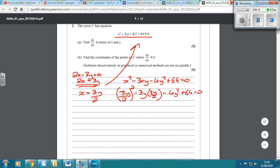So if we then expand the brackets, 3y over 2 squared is going to be 9y over 4 minus 9y over 2. So that's 9y squared minus 4y squared plus 64.